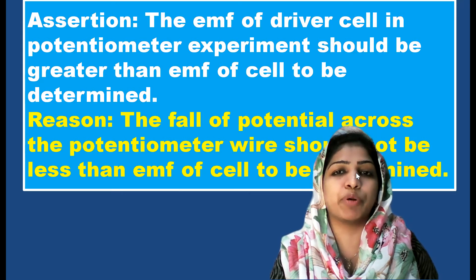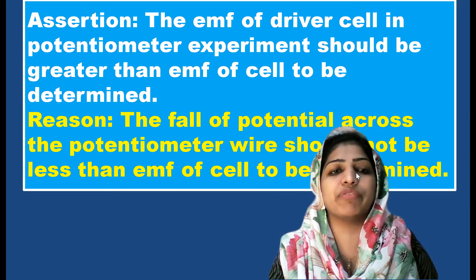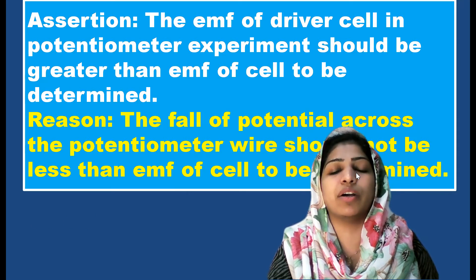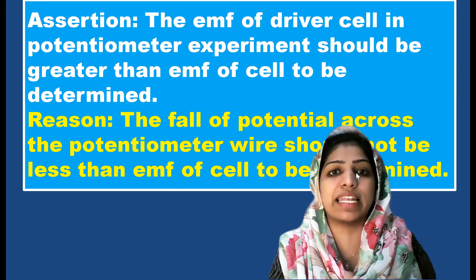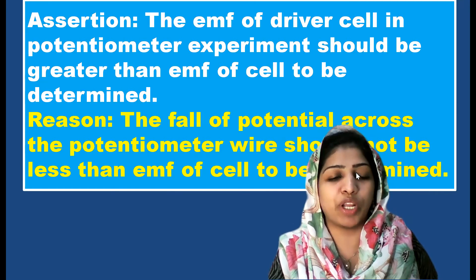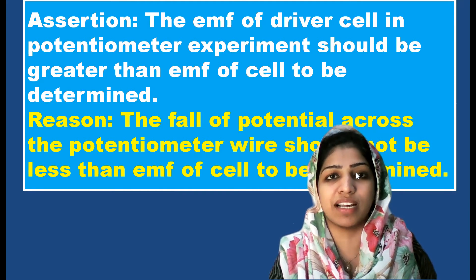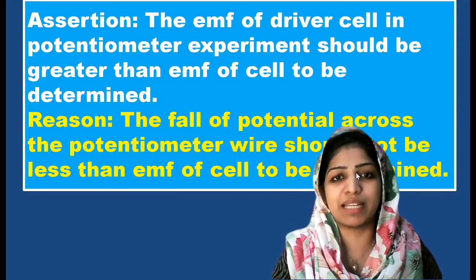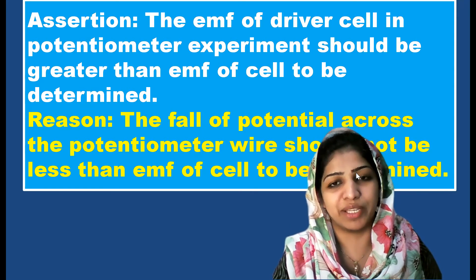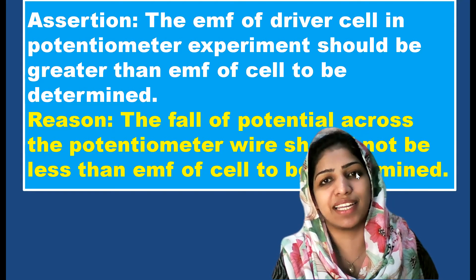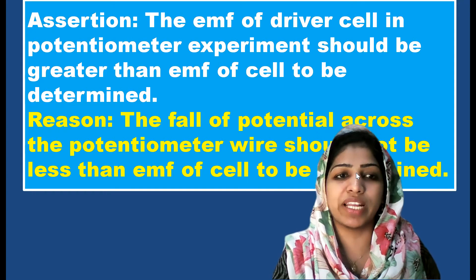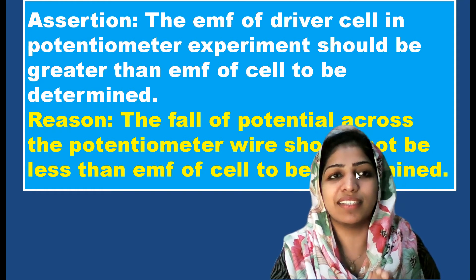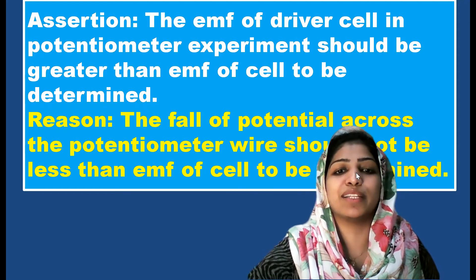Question three: the EMF of the driver cell in a potentiometer experiment should be greater than the EMF of the cell to be determined. This assertion is true. The reason is that the potential drop across the potentiometer wire must not be less than the EMF of the cell to be determined, so that a balancing length can be found. The reason correctly explains the assertion, so the answer is option A.